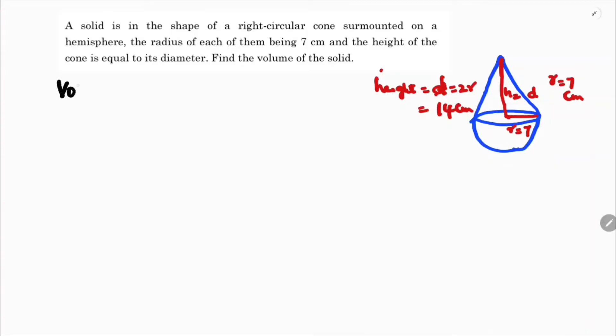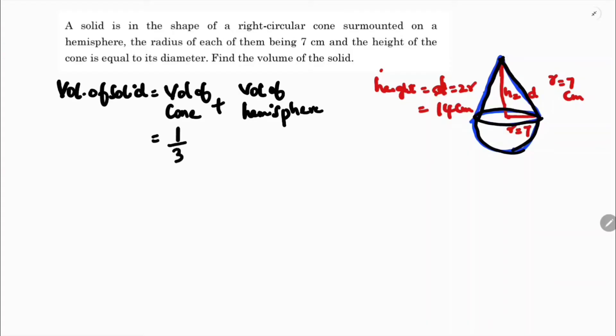Volume of solid is volume of cone plus volume of hemisphere. Volume of cone is 1/3 πr²h and volume of hemisphere is 2/3 πr³. I can take πr²/3 common, so here h is left and here 2r.